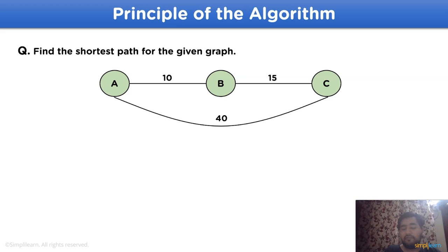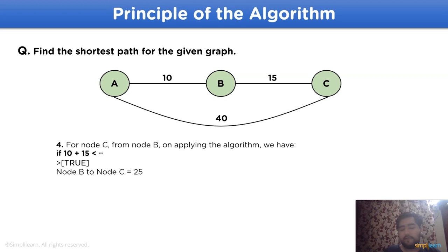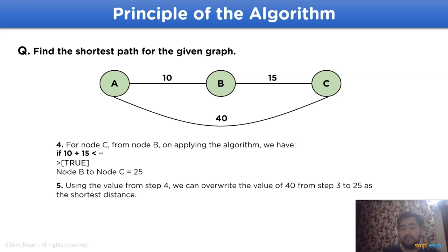But we have to find the shortest path, so a fourth step comes into picture. For node c from node b, applying the algorithm: 10 — the initial value of node b — plus 15, the attribute value between b and c, gives 25, which is less than 40. So the shortest path from node a to node c becomes 25 instead of 40. Using the same scenario and steps, we will now solve a more difficult question to understand how the algorithm is used.